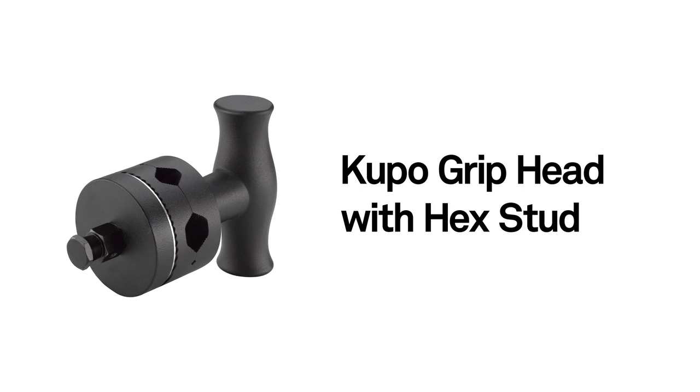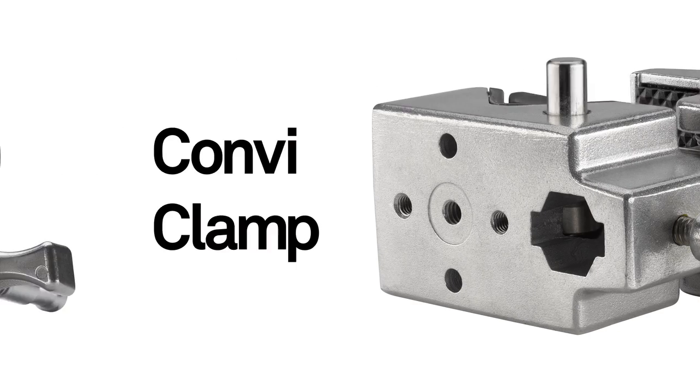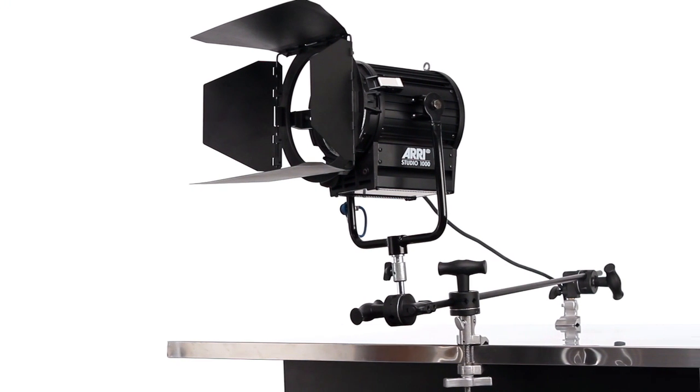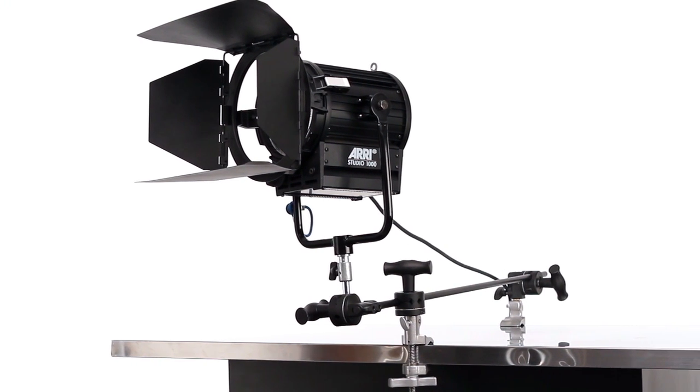The Kupo Grip Head with Hex Stud allows you to mount the grip head to any clamp with a hexagonal receiver, such as a Convy Clamp or Supervisor Clamp. This gives you the flexibility to mount a grip arm anywhere one of these clamps can go.